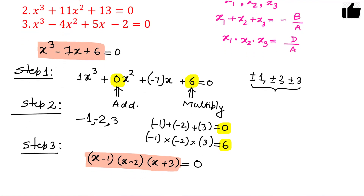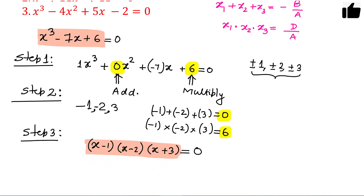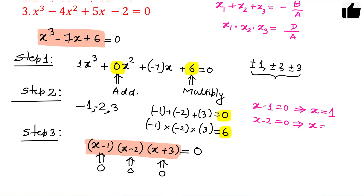Setting each factor to zero: if x minus one equals zero then x equals one; if x minus two equals zero then x equals two; and if x plus three equals zero then x equals minus three. So the three roots are one, two, and minus three.